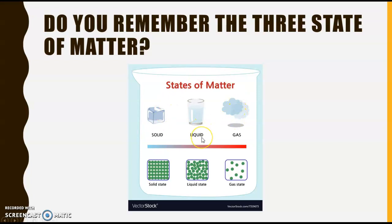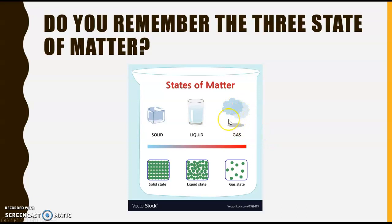Let's talk about liquids. Do you remember that particles in a liquid state are able to move around? Liquids are flowing, so they don't have a defined shape — they take the shape of whatever container they are in. Do you remember gases? Gases have no defined shape, some gases are quite difficult to see, and particles in gases move freely around each other.